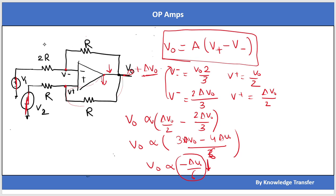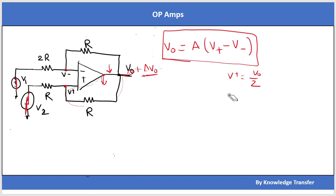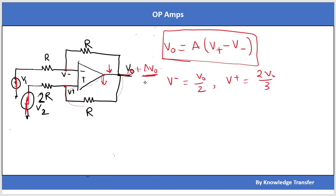Let's consider one more example. We slightly change the circuit — instead of 2R at the previous position, we place 2R at the other location — and analyze whether this is a negative or positive feedback system. Now V_minus = V0/2 and V_plus = (2/3)·V0. Applying a disturbance delta V0: delta V_minus = delta V0/2 and delta V_plus = (2/3)·delta V0.